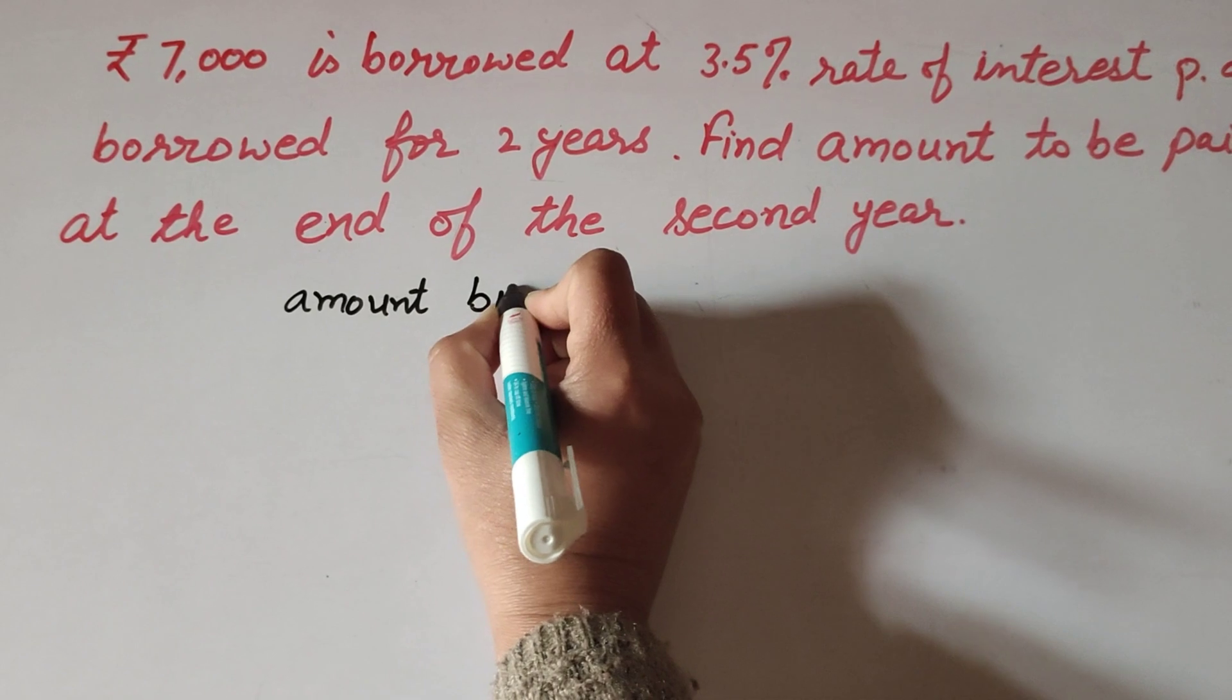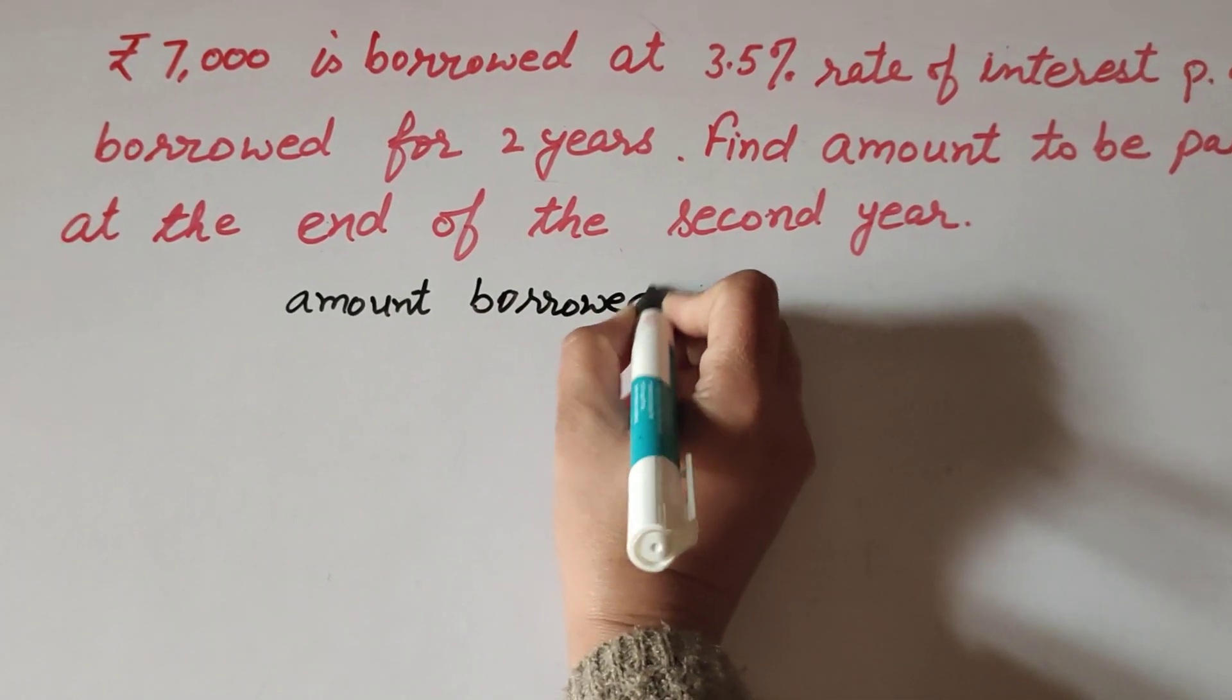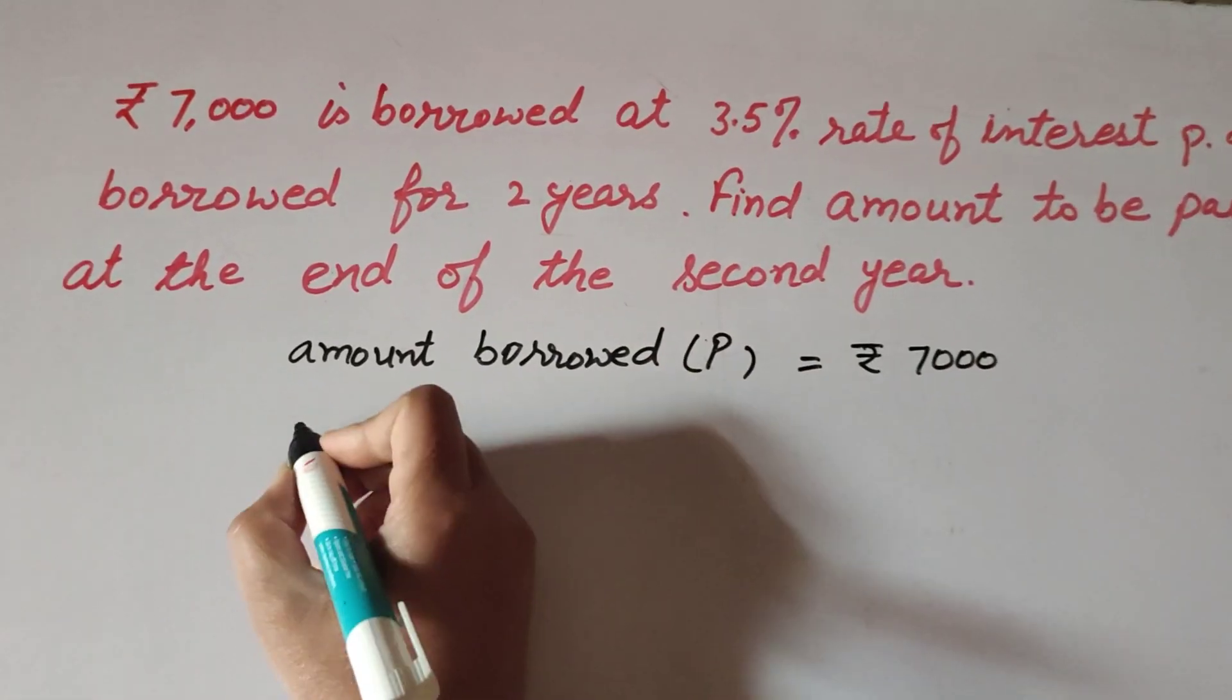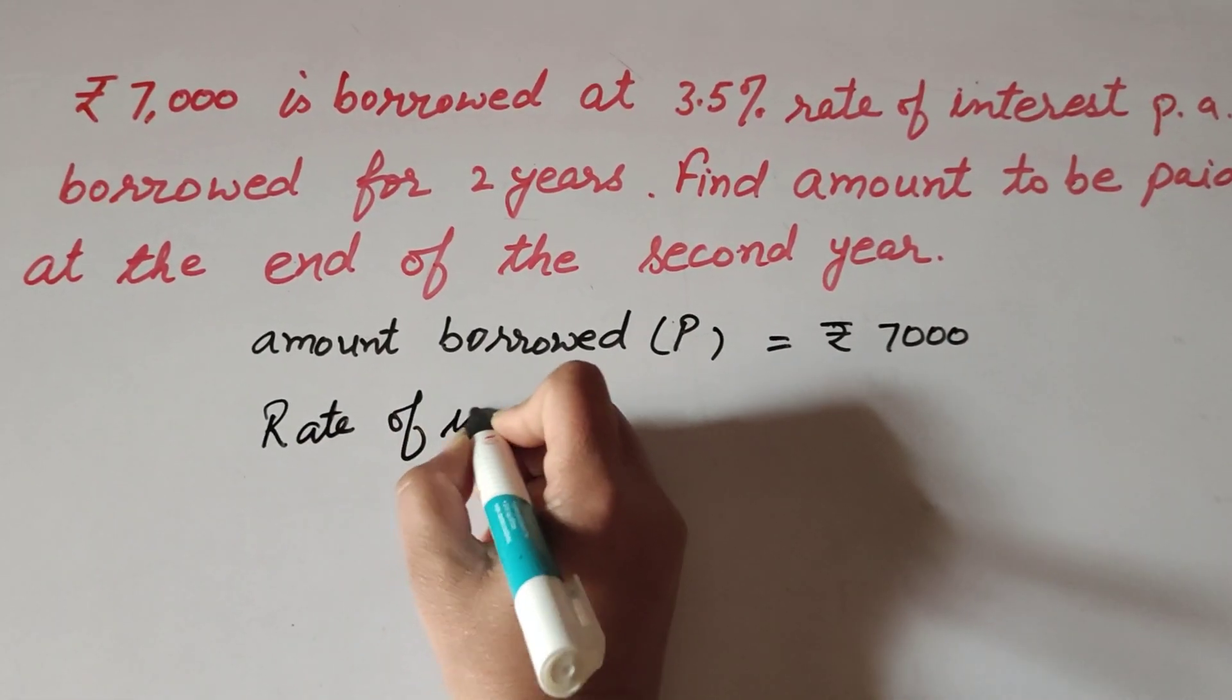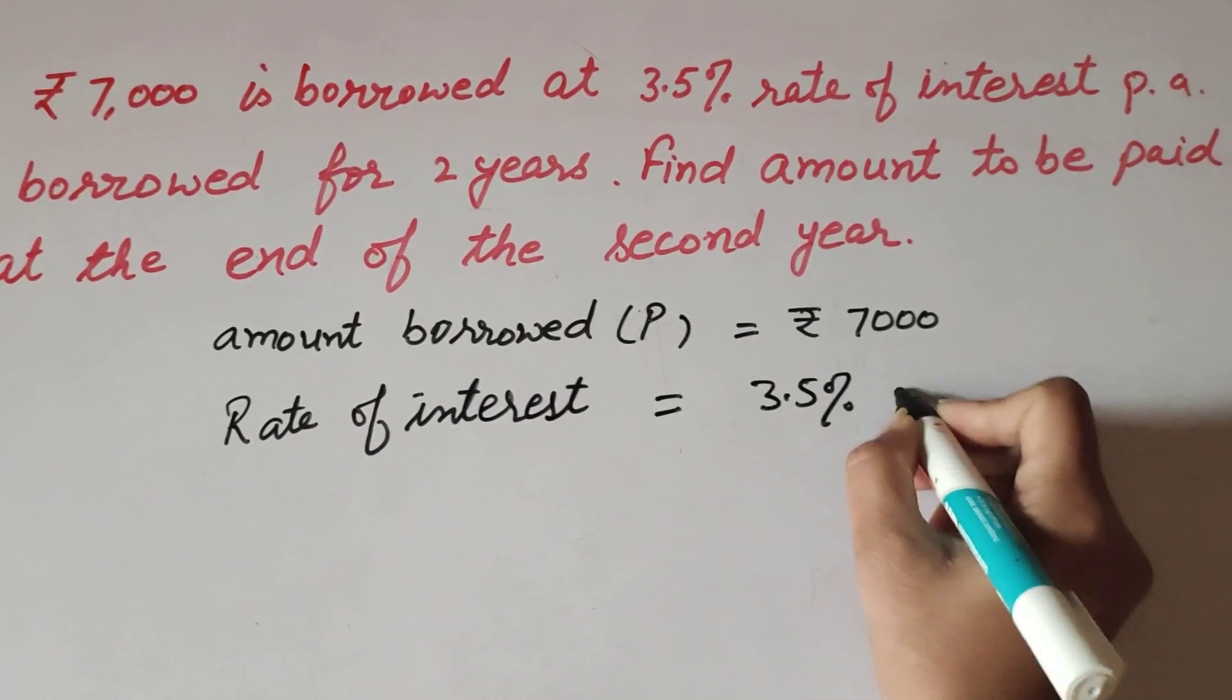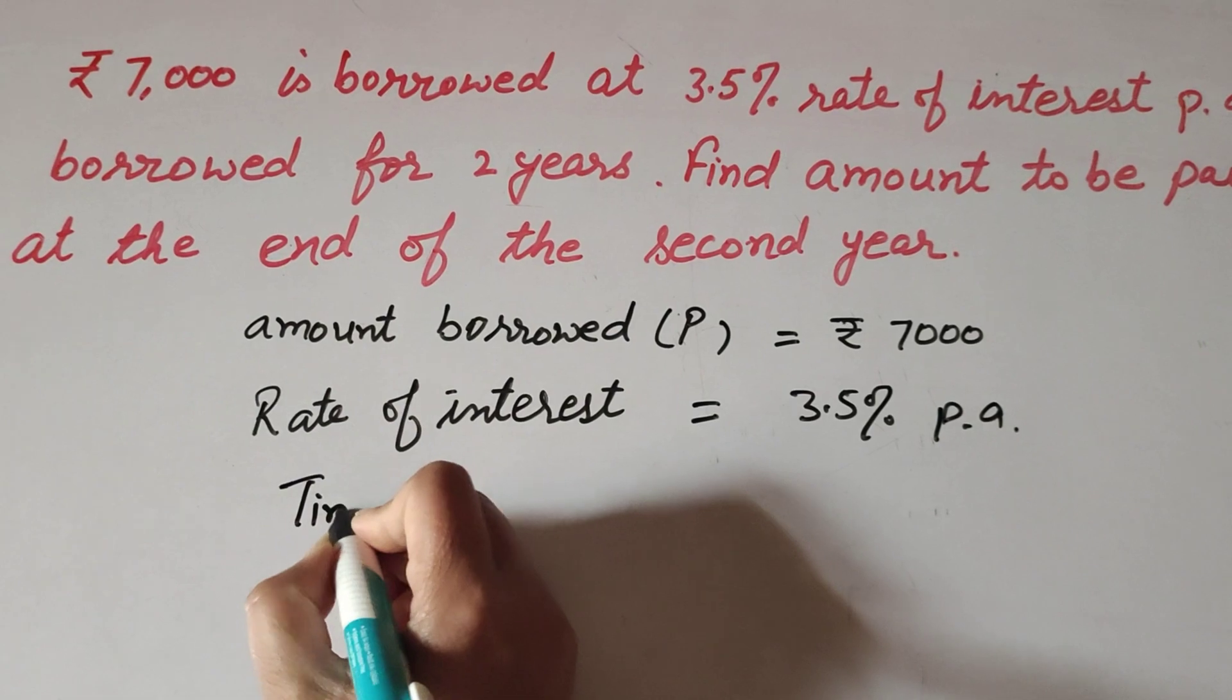Given: Amount borrowed, or Principal (P) = ₹7000. Rate of interest = 3.5% per annum. Time = 2 years.